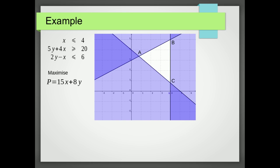I've just added in the labels A, B, and C, which are the vertices of our feasible region. So the first thing we need to do is find the coordinates of each of those points,